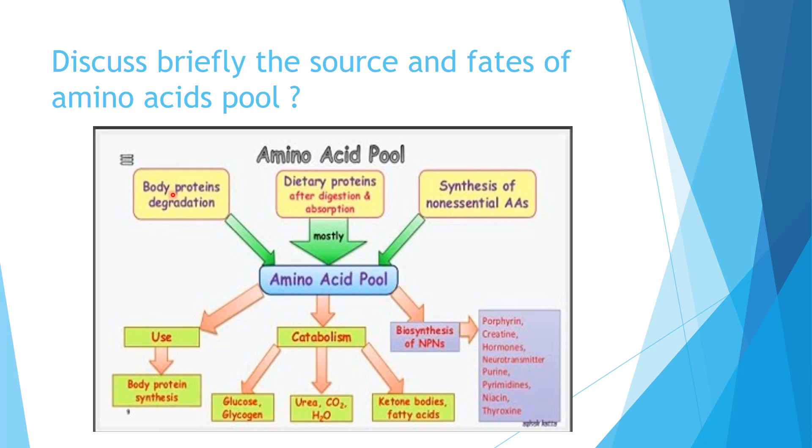The second source is body protein degradation. When proteins present in the body are degraded or broken down, free amino acids are produced. These free amino acids are also a source of the amino acid pool.